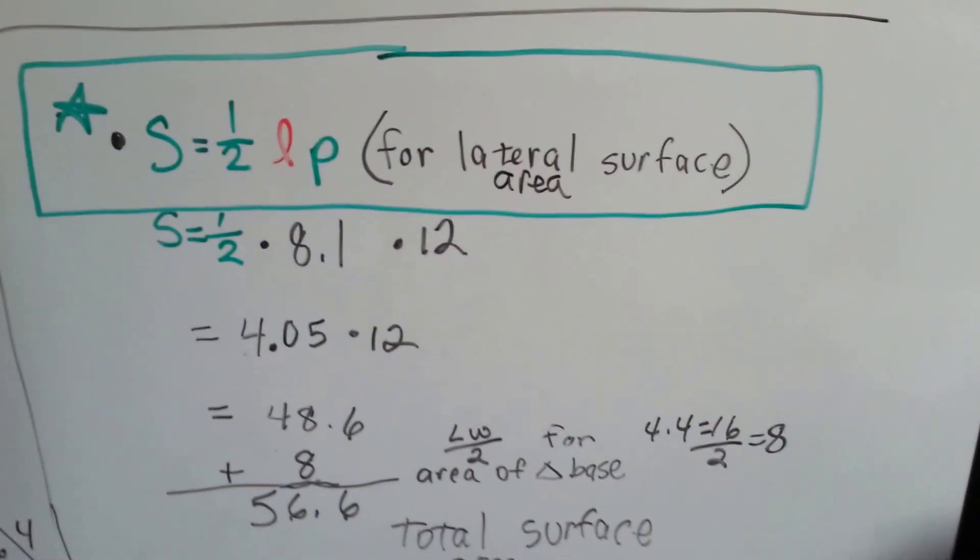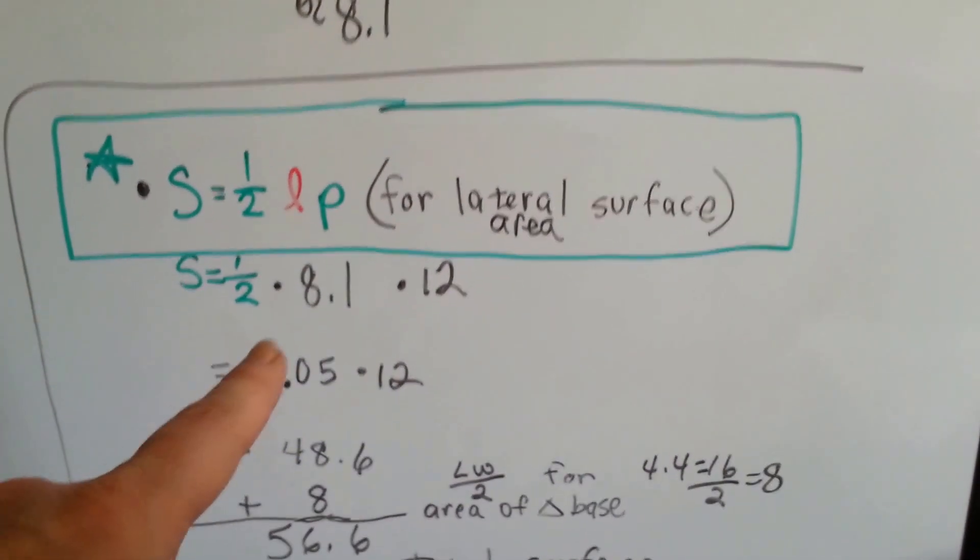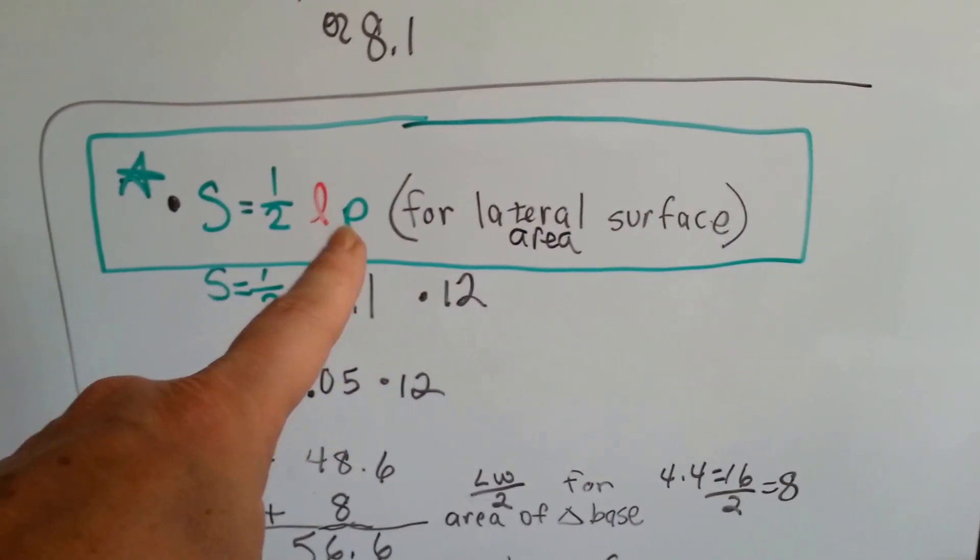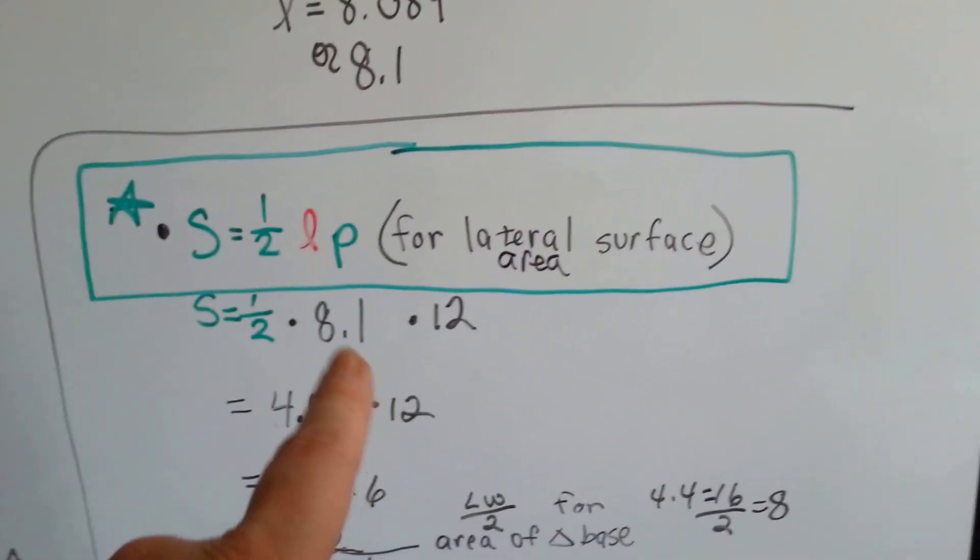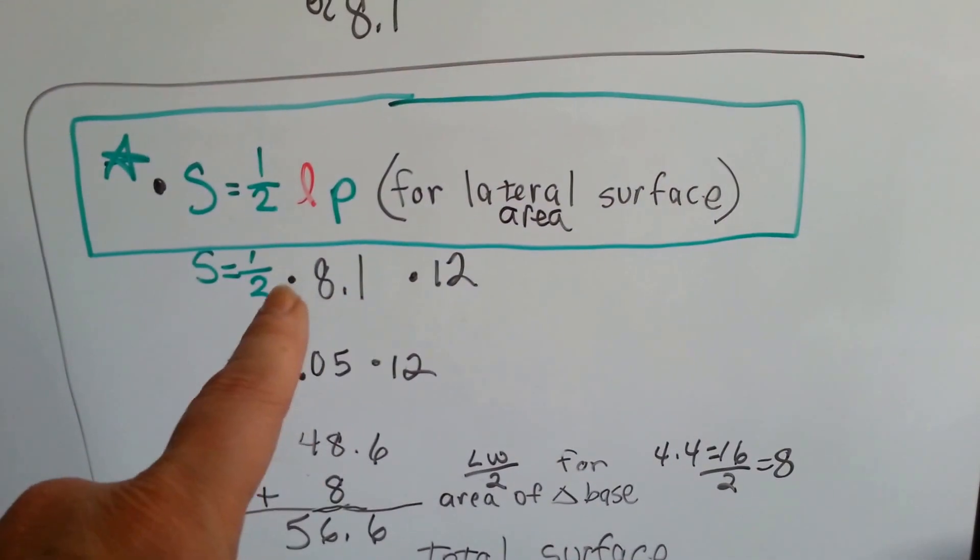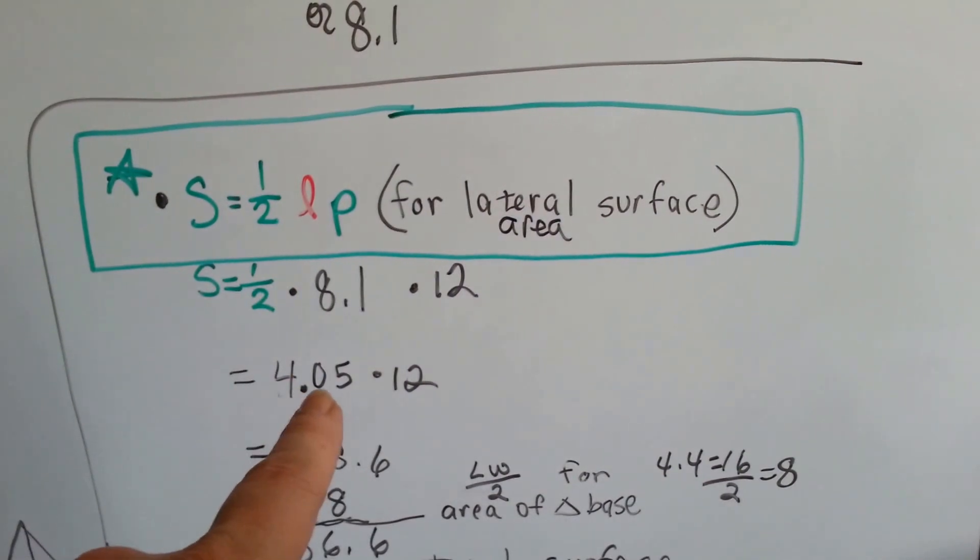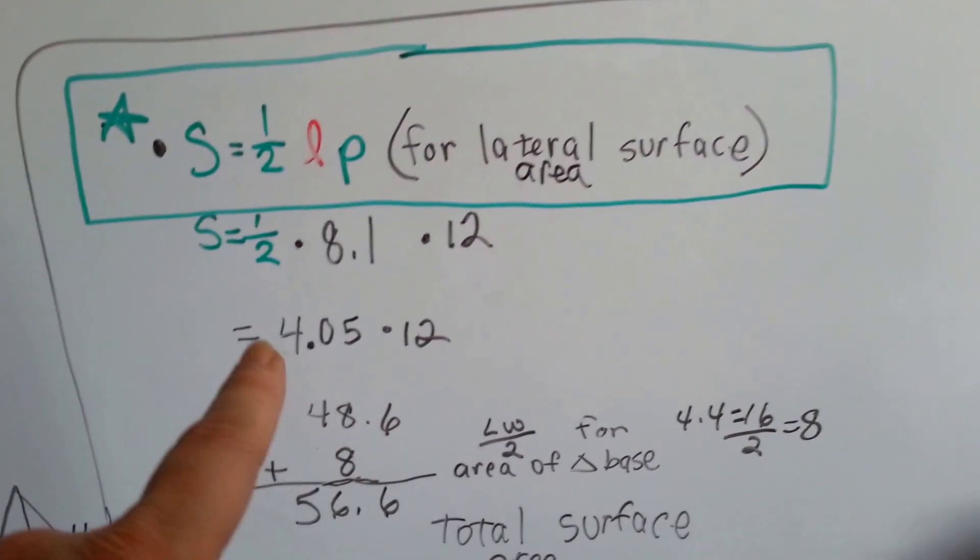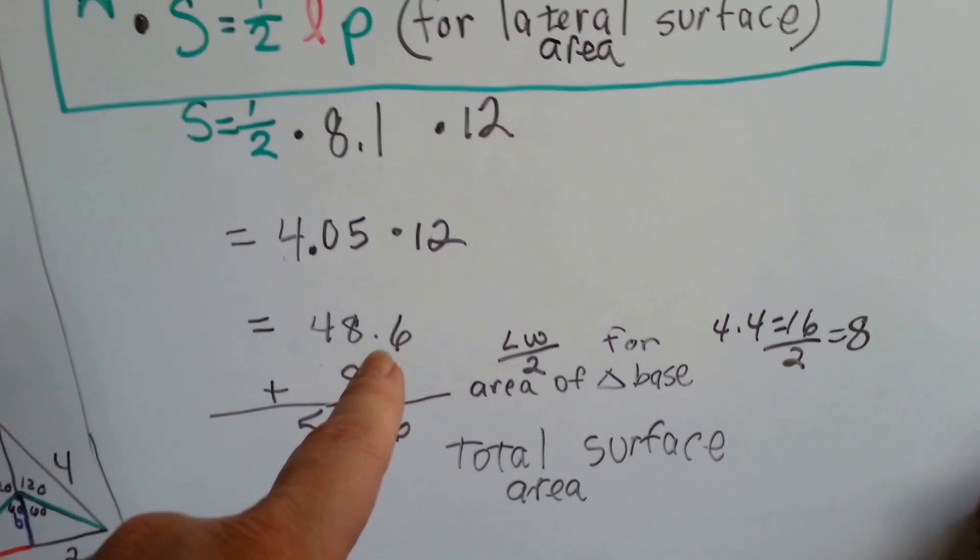Here's the green way. We're going to use this formula for a lateral surface area. So we know that the slant height is 8.1. We know the perimeter is 12 because it was 4 all the way around, 4 plus 4 plus 4 is 12. So we need to multiply 8.1 by a half which is 4.05 and now we need to multiply it by the perimeter which is 12. 4.05 times 12 is 48.6.